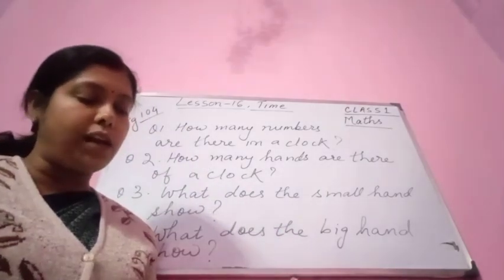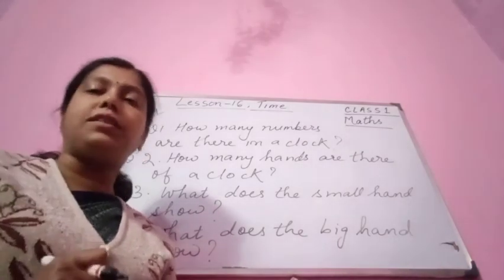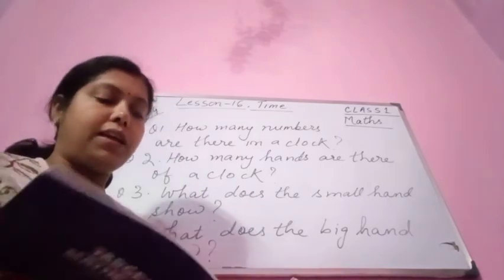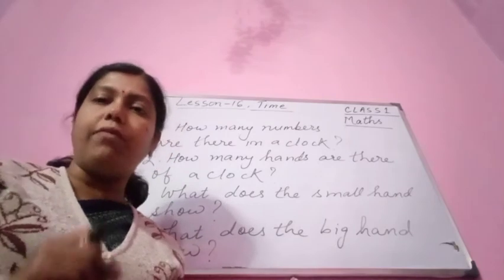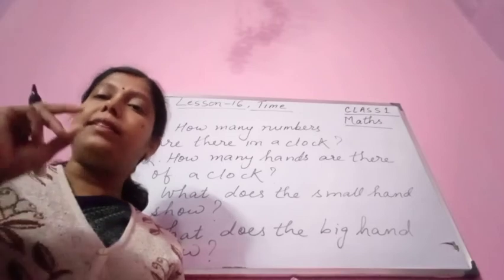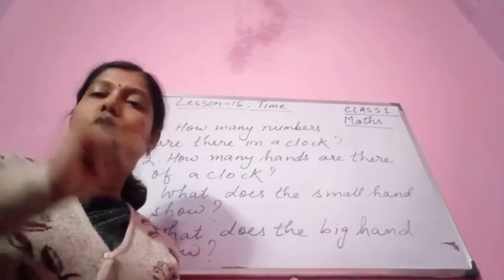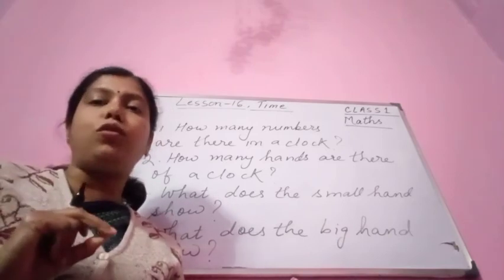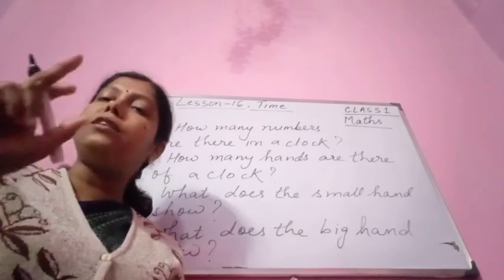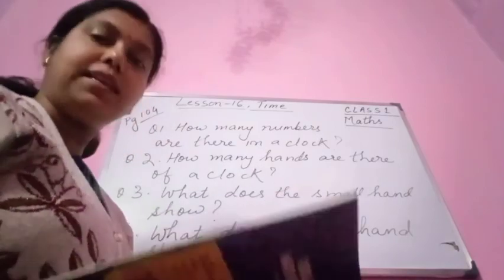When the big hand is on 12 and the small hand is on any number, you read the time by the hours. If the big hand is on 12 and the small hand is on any number from 1 to 12, you can say the time. Suppose the small hand is on 1 and the big hand is on 12 — so it is 1 o'clock. Small hand on 2, big hand on 12 — so it is 2 o'clock. In this way you can easily say the time.